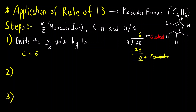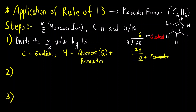Number of carbons is equal to the quotient. Whatever is the value of the quotient, that will be the number of carbons, and the number of hydrogens will be quotient plus remainder. You have to add both these values — quotient and remainder. The most common mistake is to use only the remainder as the number of hydrogens — that will be incorrect. For hydrogen you have to add both quotient and remainder.